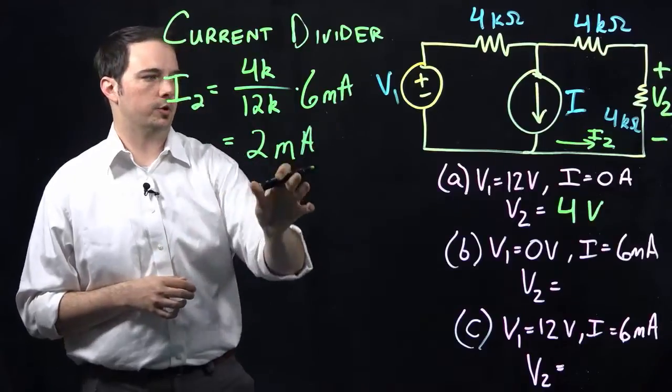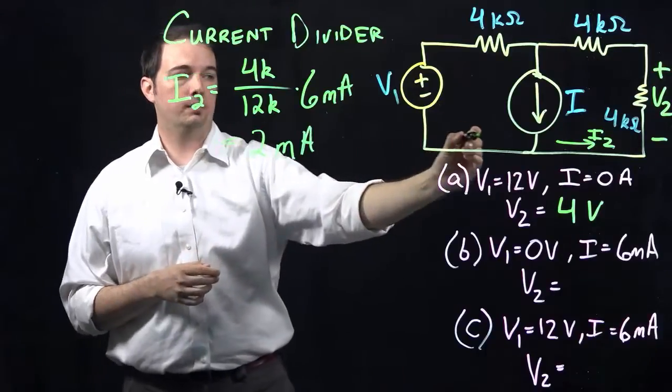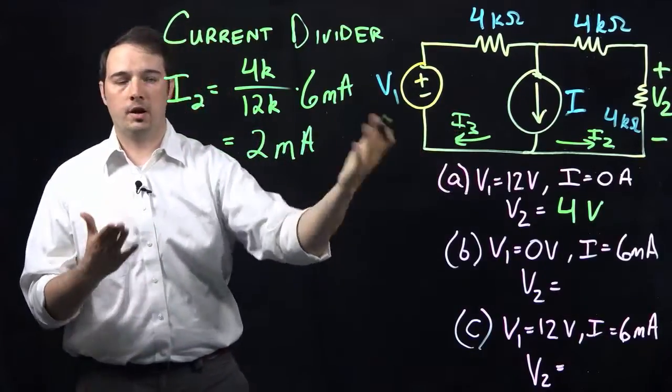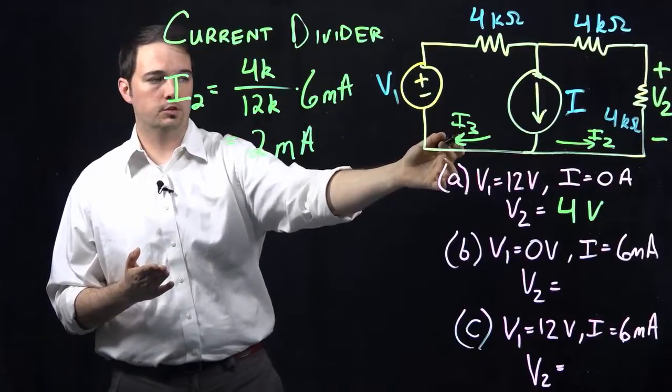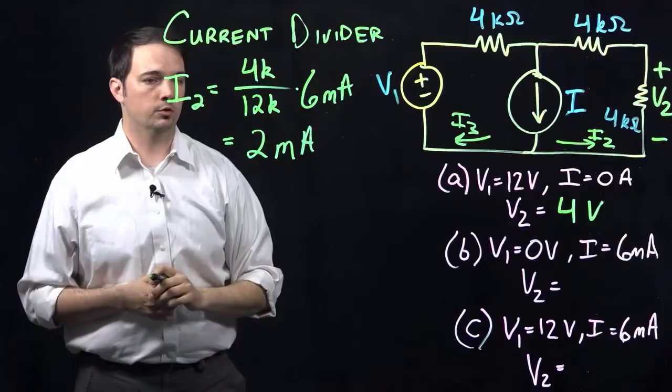So we know that we have 2 milliamps of current flowing through this branch. Hopefully you would also realize then that if I had indicated some current here, let's say I3, we should know that we have 4 milliamps of current traveling through this branch, because that would satisfy KCL rules and such.